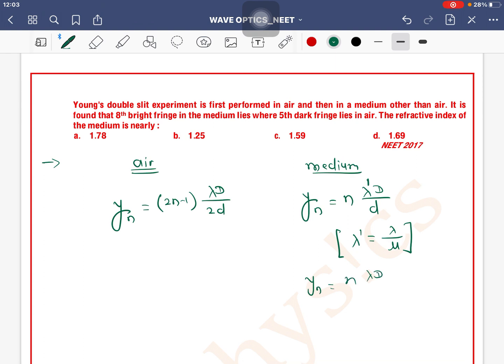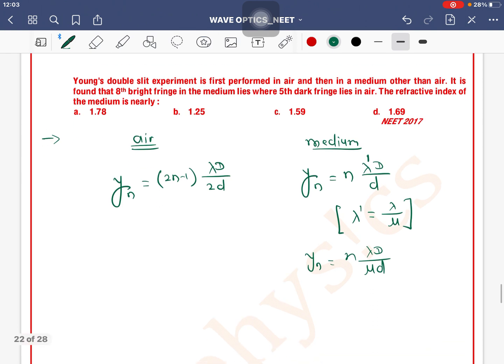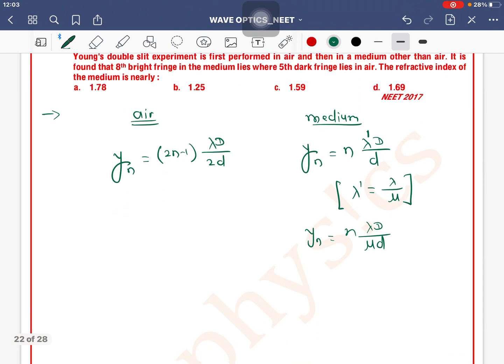So yn value will be n lambda d divided by mu d. And according to the data, it is found that the 8th bright fringe in the medium lies where the 5th dark fringe lies in air.